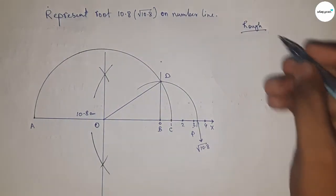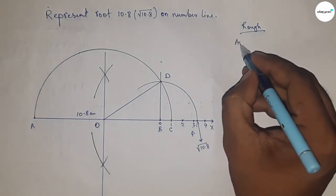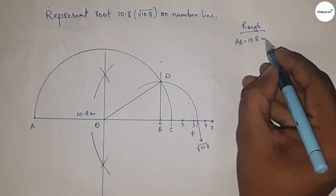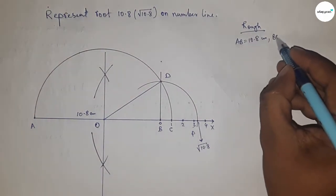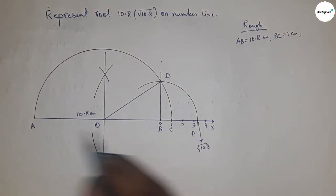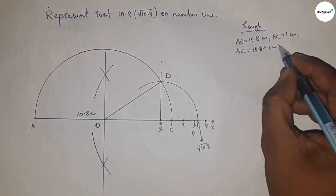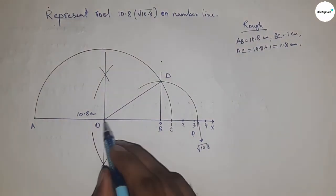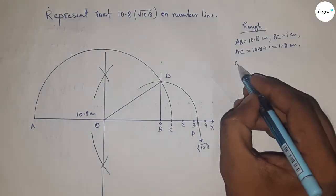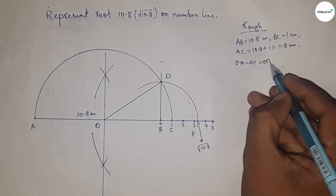Now roughly discussing the calculation. Given AB equal to 10.8 centimeter, BC equal to one centimeter, so we can write AC equal to 10.8 plus one, so this is 11.8 centimeter. Now radius OA, OC and OD equal to 11.8 by 2 equal to 5.9 centimeter.